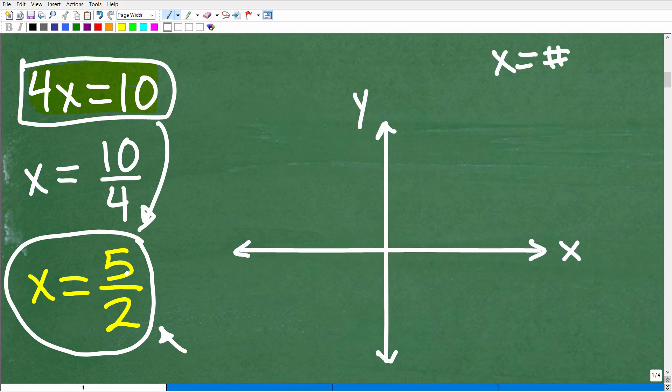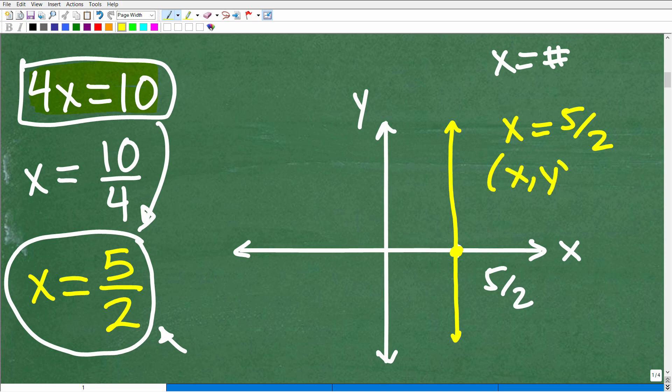The way you graph that is you go to this number on the x axis, so right here, we'll go to 5 halves right there, and then we simply draw a vertical line through that point. This is the line x is equal to 5 halves. Any point on this line, we have an xy point. Any xy point is on here. It doesn't make a difference. We have infinite many points that are on this line, but all of these points have one thing in common. Their x coordinate is 5 halves. The graph of that would be a vertical line like so.